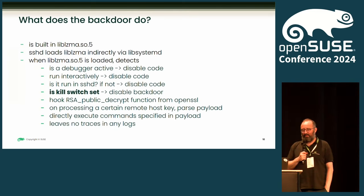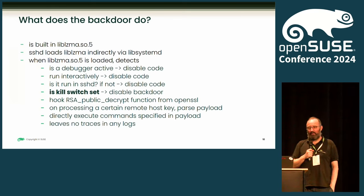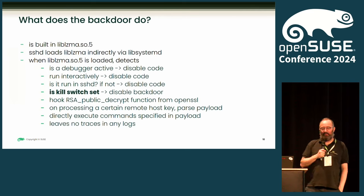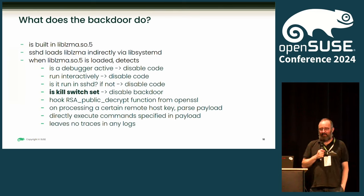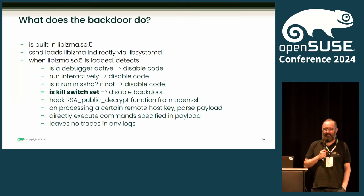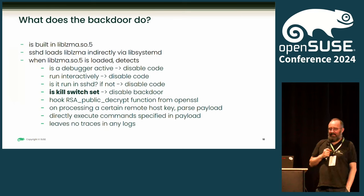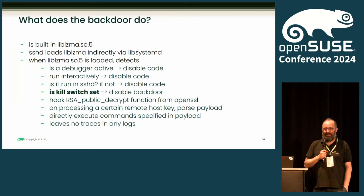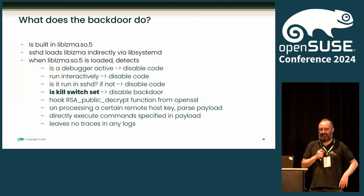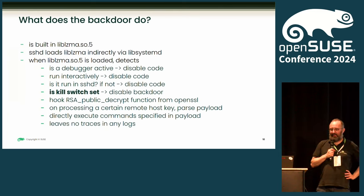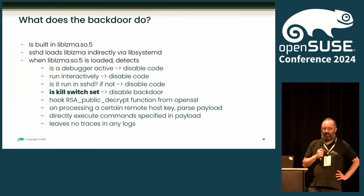The only problem was that the whole thing took quite long due to the symbol lookup they were doing — like 0.3 or 0.4 seconds — so that the actual researcher who found it, Andres Freund from Microsoft, was able to see this as a performance regression and in turn found the backdoor. The reason it took so long is that it used a very interesting method of symbol lookup to avoid importing any kind of symbols, because that would have shown up on debugging or binary inspection. They used the LD audit functionality from GLibC to look up the functions, to avoid any kind of detection.